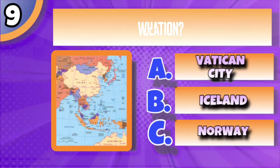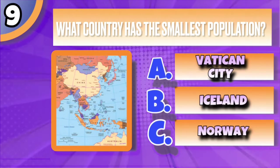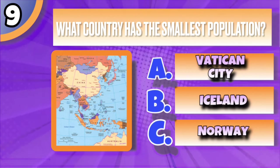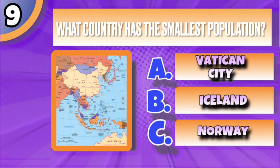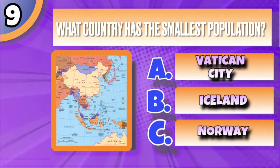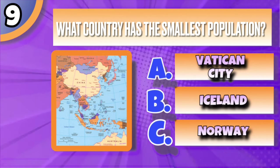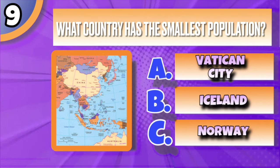Moving on to question number 9 of this general knowledge quiz. What country has the smallest population? Is it A Vatican City, B Iceland, or C Norway?